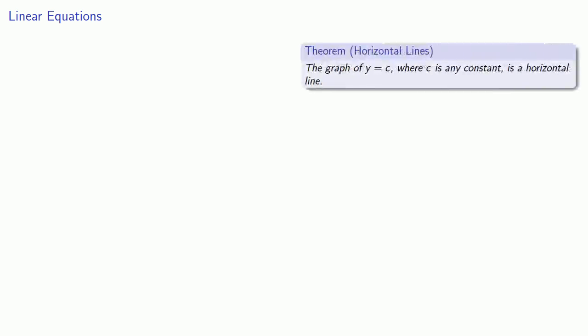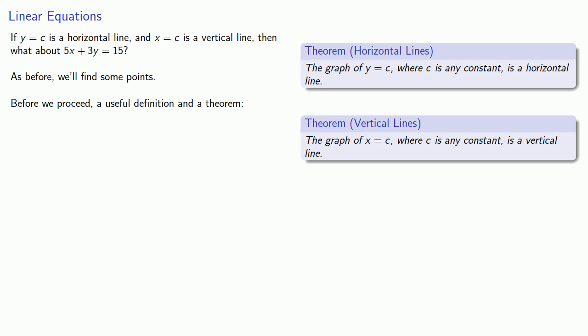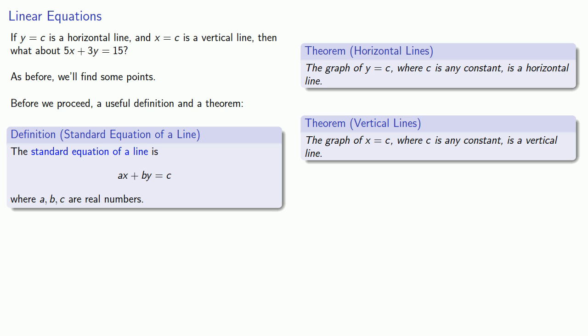And let's pause a moment and see what we've gotten. If y equals c is a horizontal line, and x equals c is a vertical line, then what happens when we have an equation that involves both x and y, like 5x plus 3y equals 15? As before, we'll find some points. But before we proceed, we'll throw down a useful definition and a theorem. The standard equation of a line is ax plus by equals c, where a, b, and c are real numbers. Well, actually, I'm putting Descartes before the course, because we should actually point out that the graph of ax plus by equals c is a straight line.